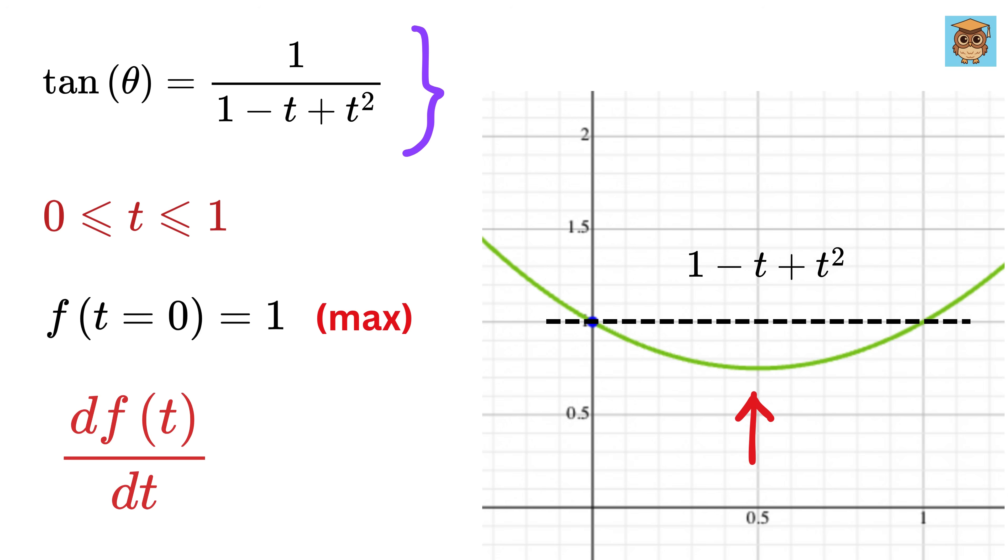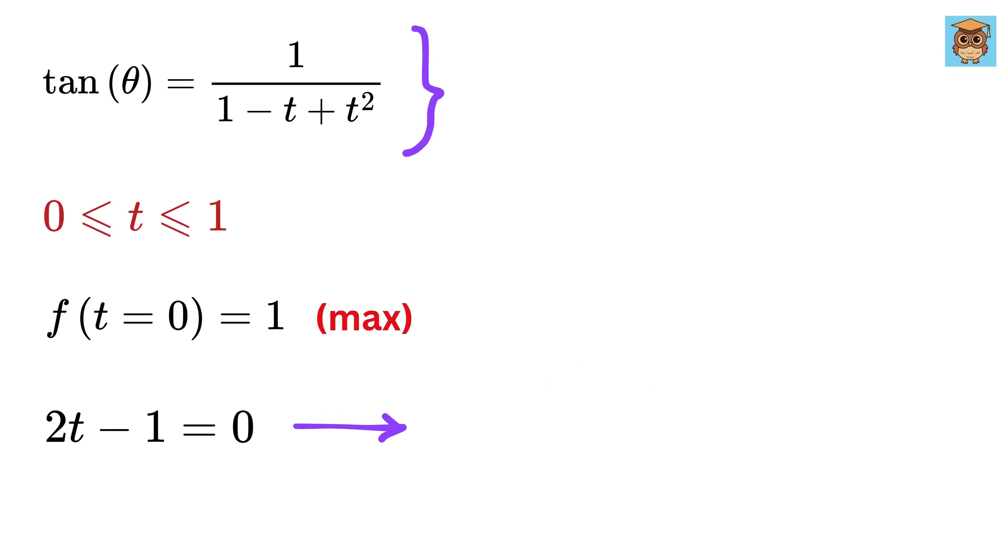Which we can find by differentiating this function with respect to t, which will be 2 times t minus 1, and set it to 0. This gives us t equals half, and the value of this thing will be 1 minus half plus half squared. This will give 3 over 4, which is the minimum of this function.